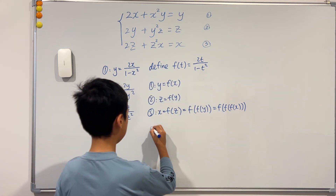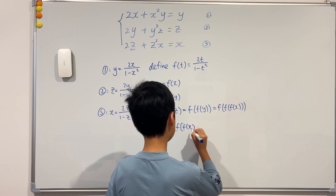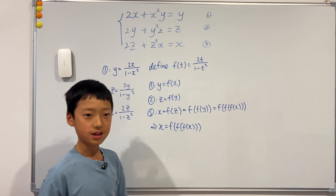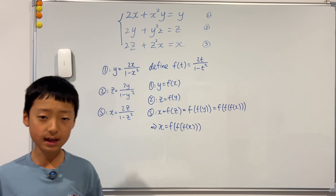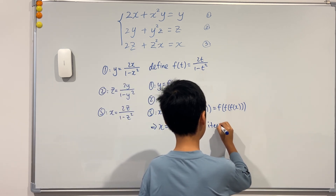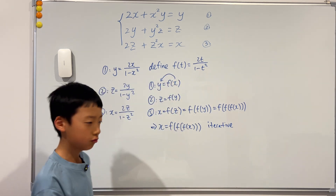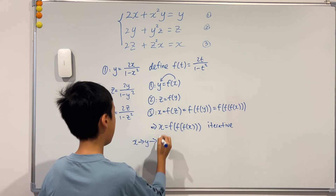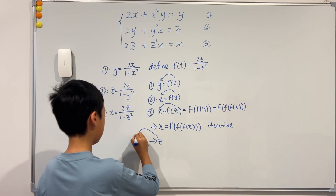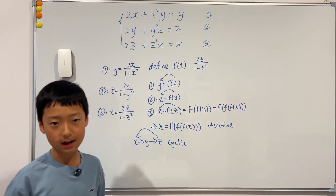So x equals f(f(f(x))), meaning that after applying three iterations of this function to x, we get back x. This is what we call iterative behavior. Also, from x we get y, from y we get z, and from z we get back x — this is what is known as cyclic. This simultaneous system is both cyclic and symmetric.